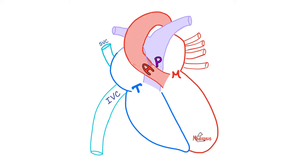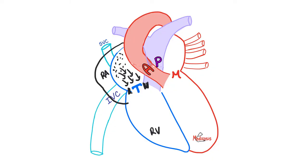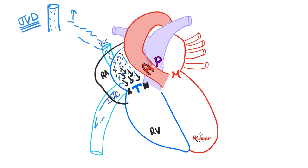Normally, deoxygenated blood returns to the right atrium and is pumped to the right ventricle through the tricuspid valve. But if the tricuspid valve is narrow, it cannot pass all of its blood to the right ventricle. So the right atrium will swell with blood and enlarge — we get right atrial enlargement. All of that blood will pile up in the right atrium, then accumulate in the superior vena cava and inferior vena cava. Following the superior vena cava upward, you encounter the internal jugular vein, which will distend — this is jugular venous distension — and the jugular venous pressure will be elevated.